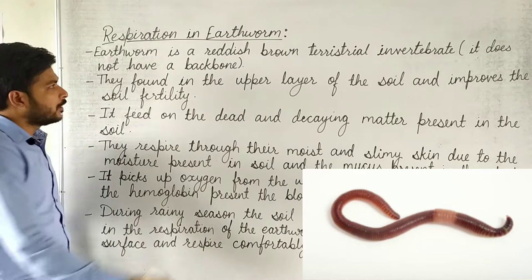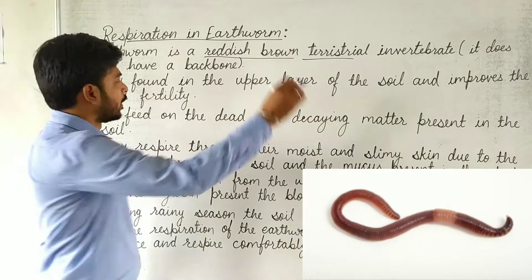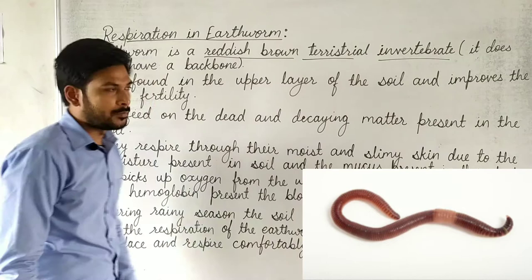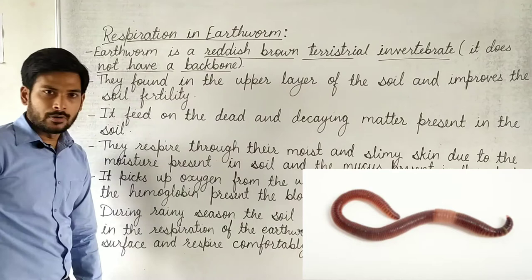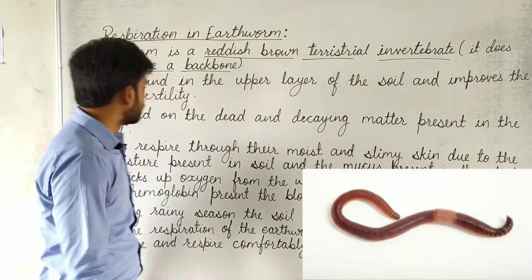Earthworm is a reddish brown terrestrial invertebrate — invertebrates are organisms which do not have a backbone. They are found in the upper layer of the soil and improve soil fertility.